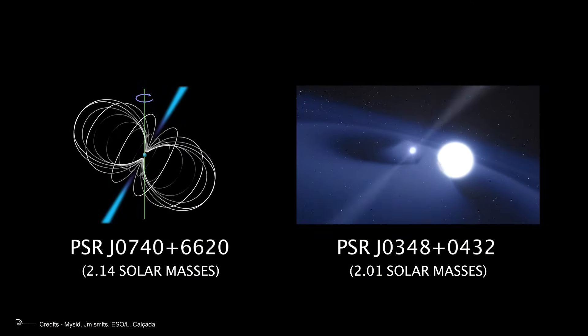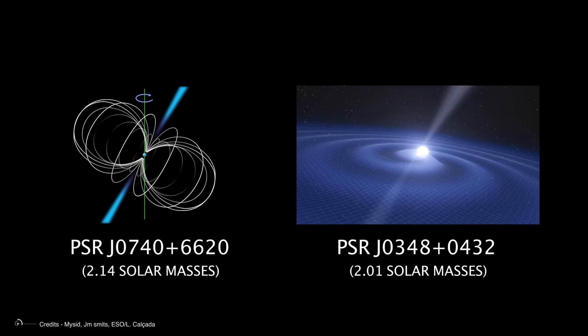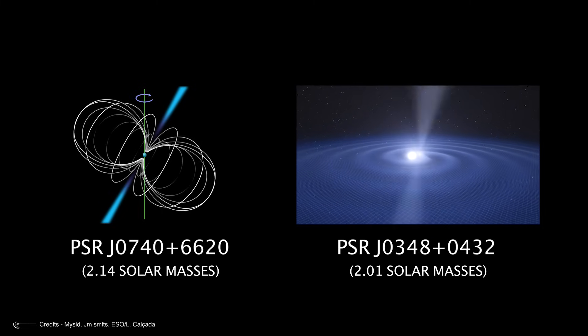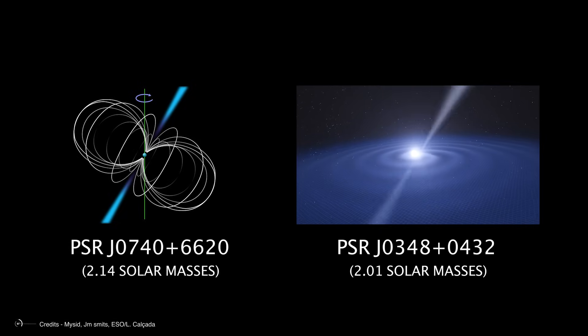Compared to other massive neutron stars like PSR J0740 plus 6620, 2.14 solar masses, or PSR J0348 plus 0432, 2.01 solar masses, J0952-0607 exists in a class of its own.